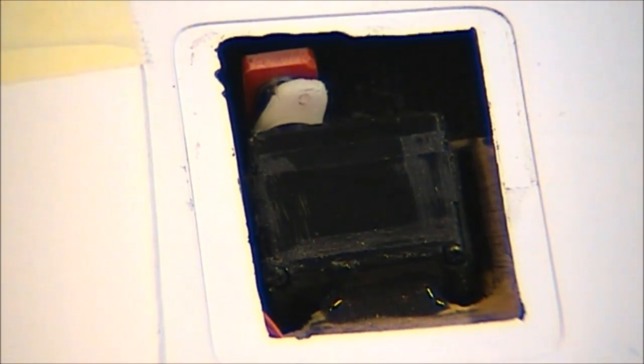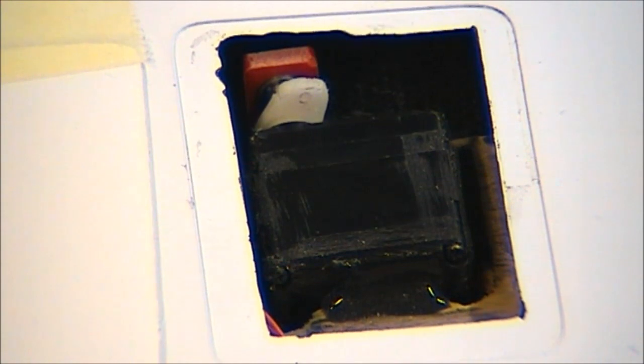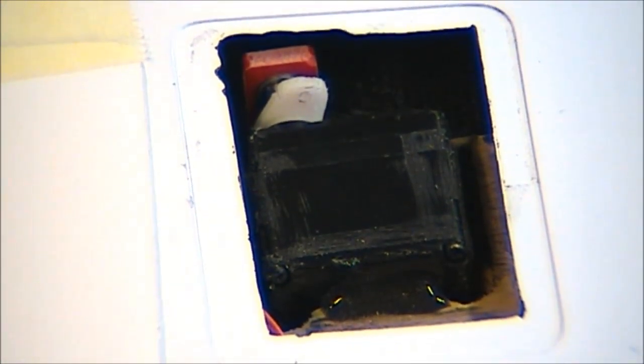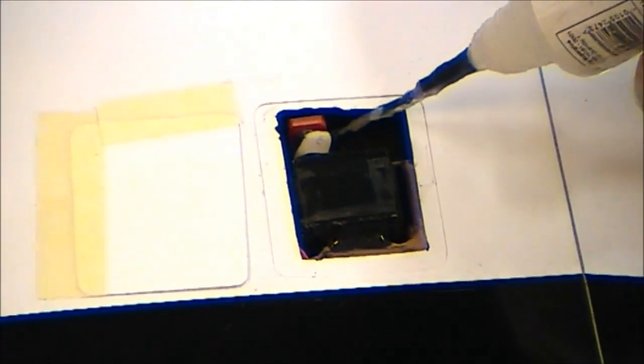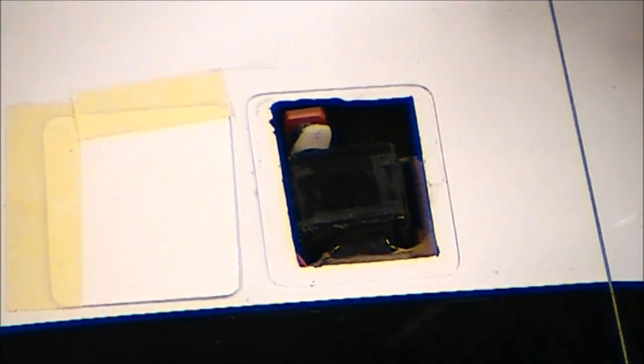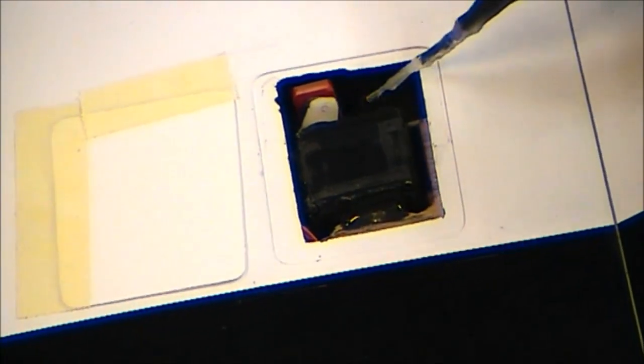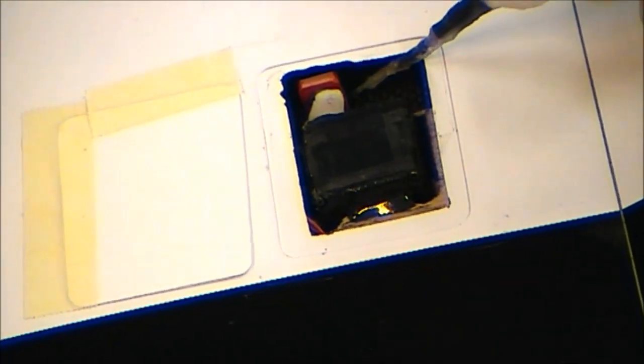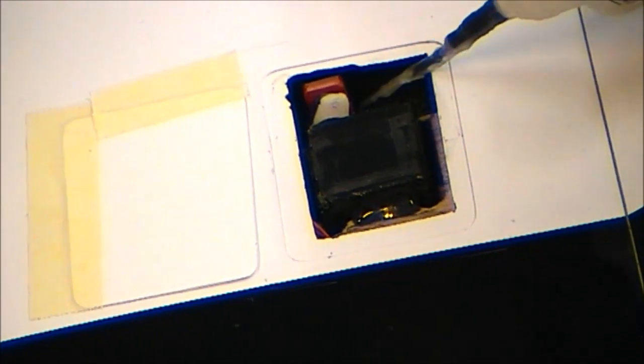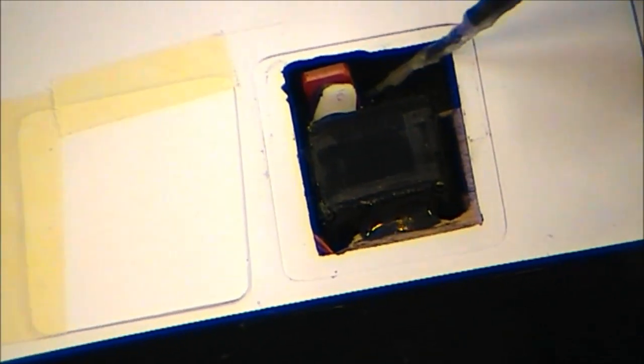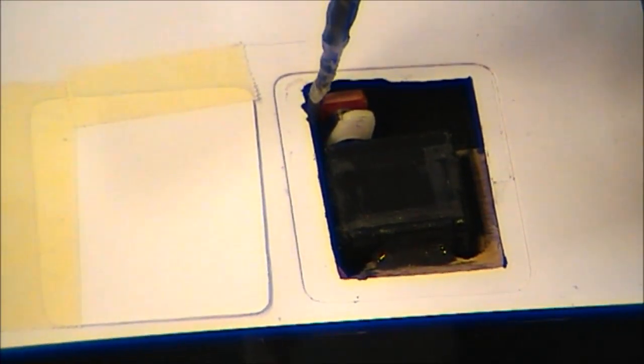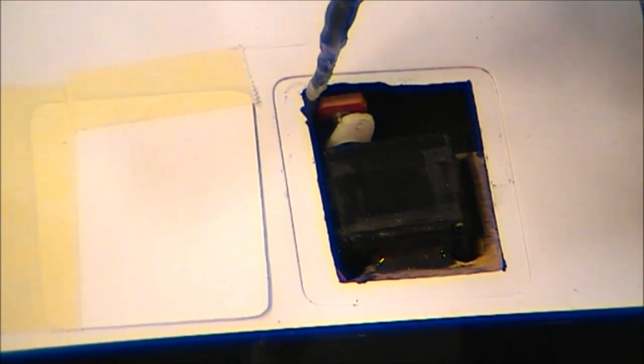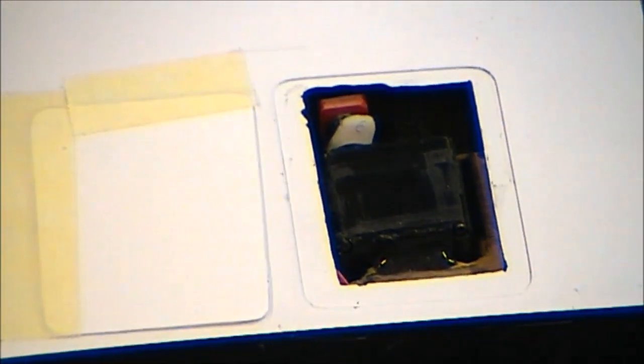To locate that and to bond it to the skins, simply cyano it in. Just a little bit of cyano there. Probably helps to tilt the wing a little bit so it can run underneath the housing to get a good joint. And do it from the other side as well. And there you go, it's done.